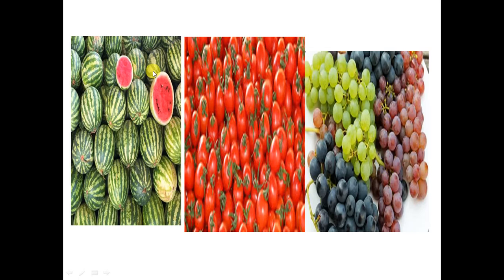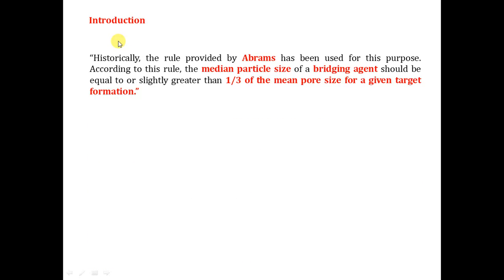Regarding the amounts: for example, if we use 10 pounds per barrel of medium, 20 pounds per barrel of fine, and 30 pounds per barrel of ultra-fine — how do we know these doses or concentrations? This determination is what is known as particle size distribution, and it is used in stress cage techniques.